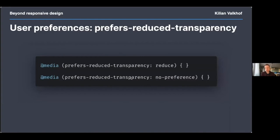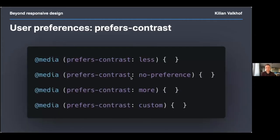Like reduced-motion, there are two options. Once support lands, consider making the reduce case the default and only add transparencies and backgrounds when the no-preference media query matches. Almost as unsupported is prefers-contrast, which indicates whether your user wants to show your site with less or more contrast.